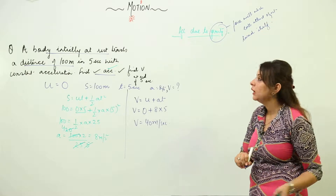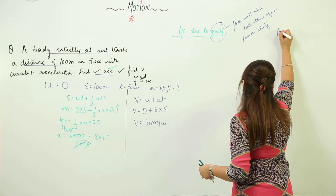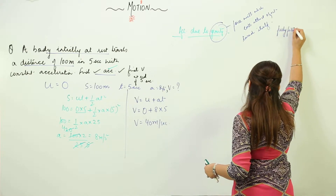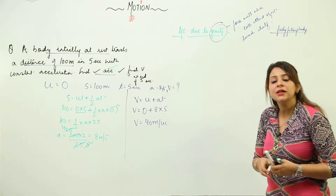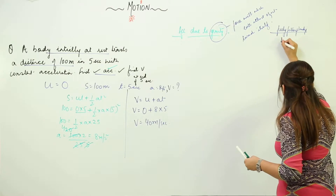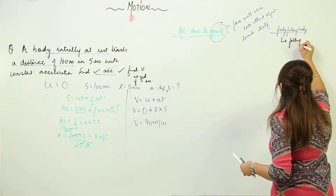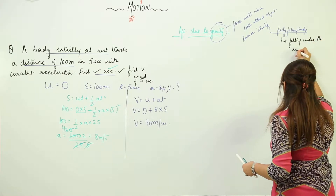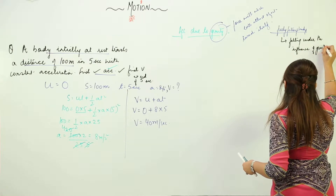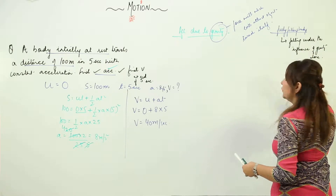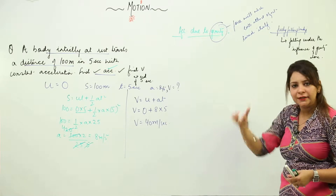This is gravity. Now we have one more term — freely falling body. A freely falling body is a body that falls just under the influence of gravity alone. That means there is no other force acting on that body; only gravitational force is acting, which is why it moves downward.